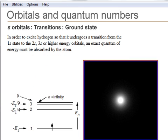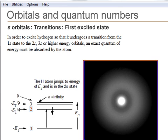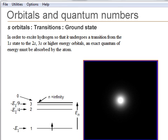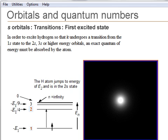When an electron undergoes a transition from a 1s orbital to another, both the energy and the wave function of the electron changes. An exact quantum of energy must be observed, which is given by the difference between two energy states.